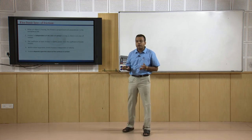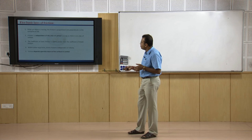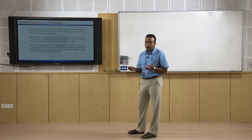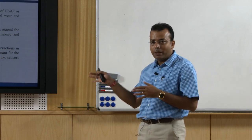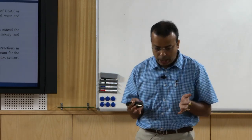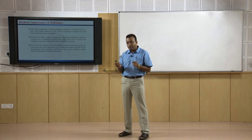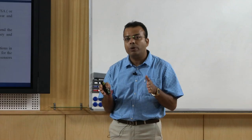We need to understand the realistic importance of tribology. Losses due to the ignorance of tribology amount to about four percent of the GDP of the USA, or about 200 billion dollars per year. Thus, it is necessary to control wear and reduce friction for economic reasons. Improving material properties and characteristics can minimize these losses.